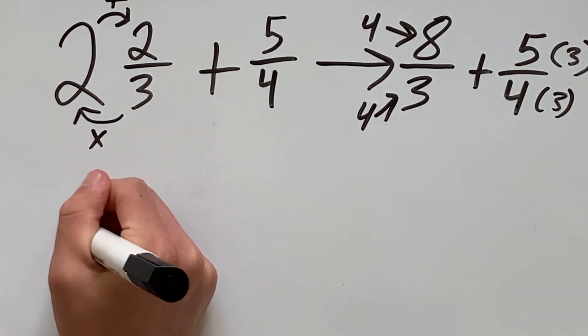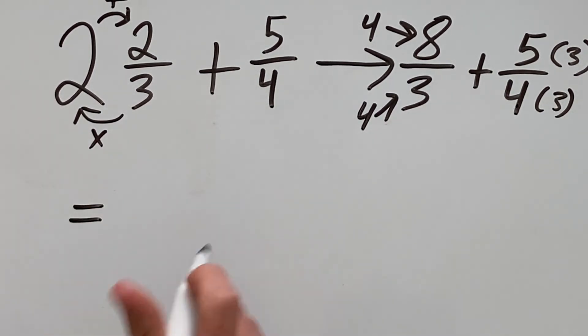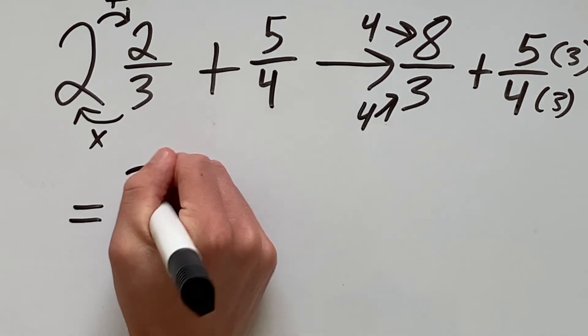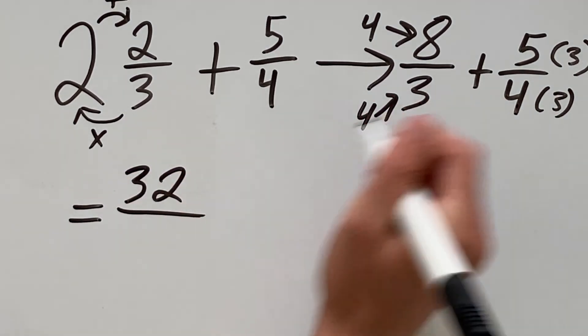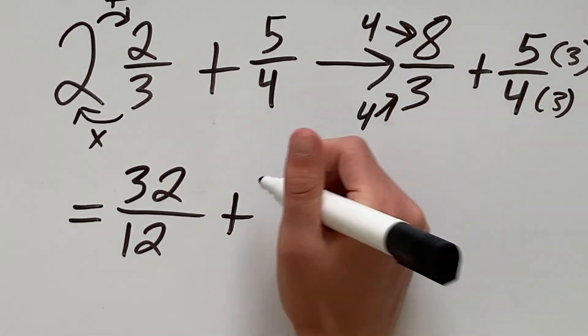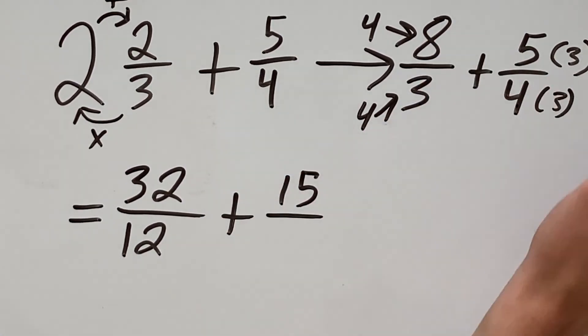That will give us a new problem of 4 times 8 which is 32 and 4 times 3 which is 12 plus 15 over 12.